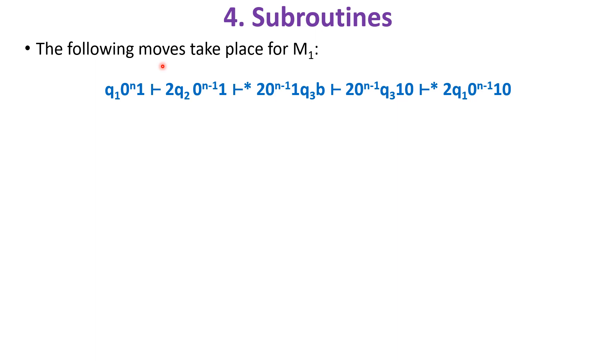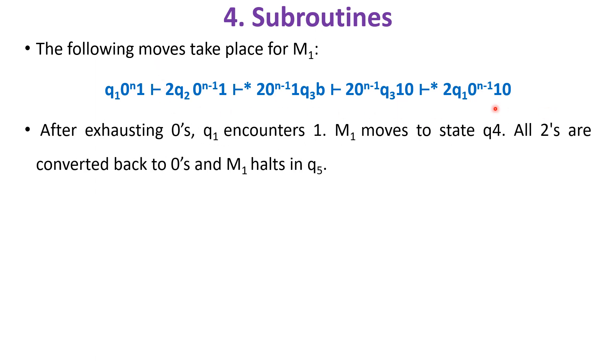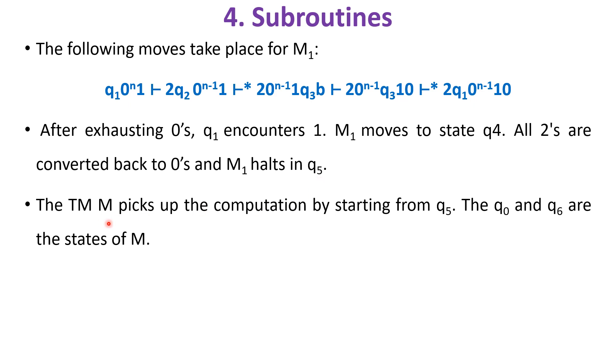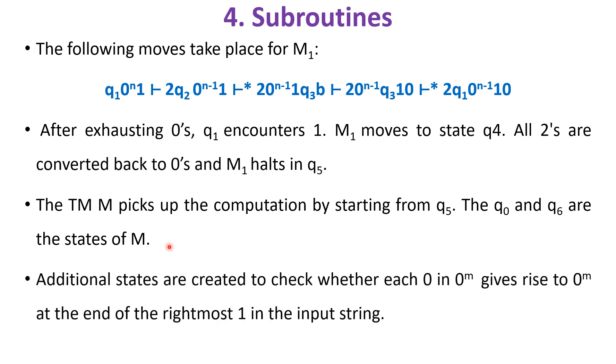The following moves take place for M1, where after exhausting 0's, q1 encounters 1 and M1 moves to state q4. All 2's are converted back to 0's and M1 halts in q5. The Turing machine M picks up the computation by starting from q5. The q0 and q6 are the states of M. Additional states are created to check whether each 0 in 0^m gives rise to 0^n at the end of the rightmost 1 in the input string.